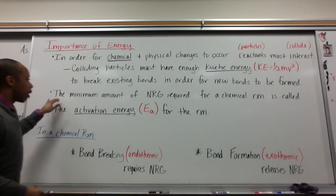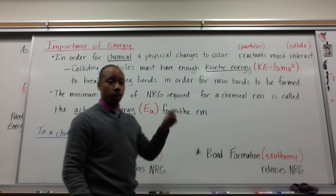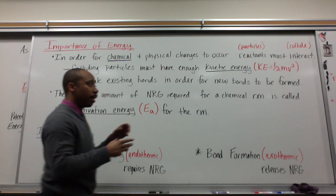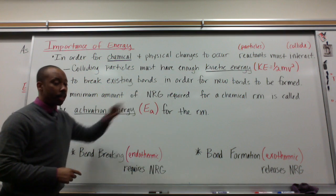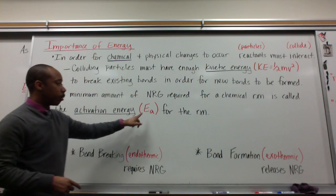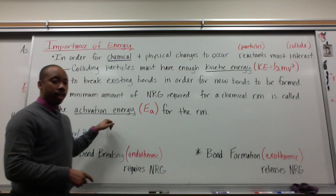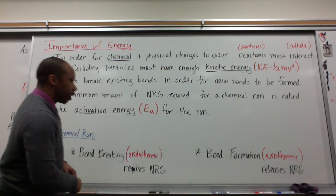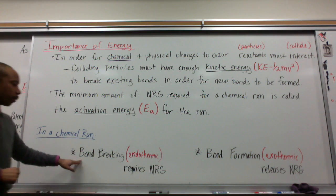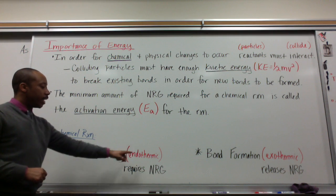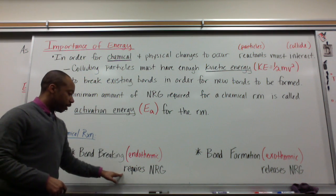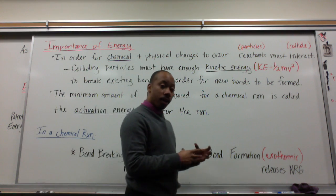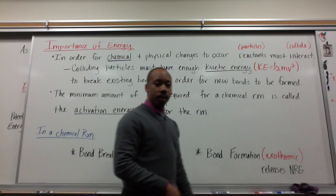The minimum amount of energy required for a chemical reaction — the jumpstart that chemical reaction needs — is called the activation energy, which has the symbol E sub A. The activation energy is the minimum amount of energy needed for that reaction to actually spontaneously start. In a chemical reaction, bonds break, which is an endothermic change, meaning energy is being absorbed — it requires energy. When bonds form with your products, energy is being released, and it's an exothermic process.